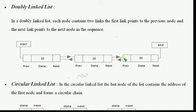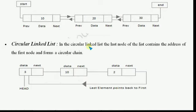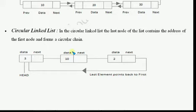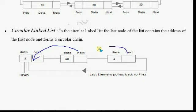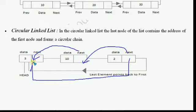The third linked list type is the circular linked list. Circular linked list is similar to singly linked list, but the difference is that in singly linked list the last node stores null, whereas in circular linked list the last node's address part stores the address of the first node, so we can access nodes in a circular way.